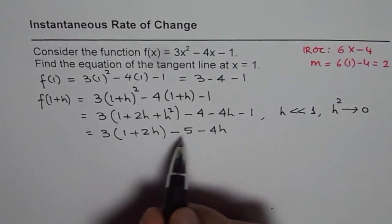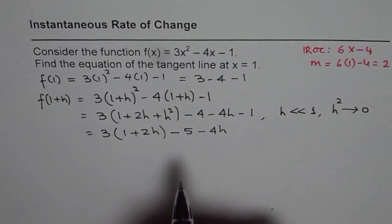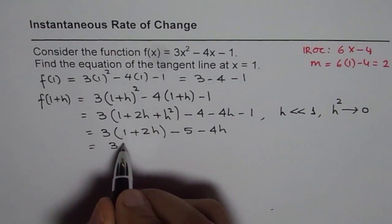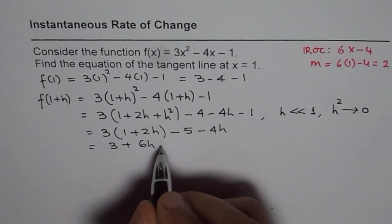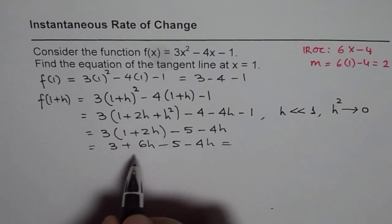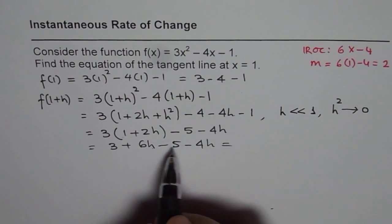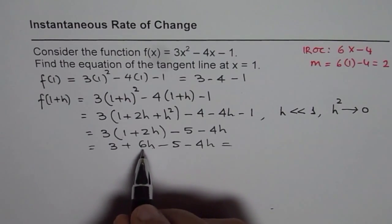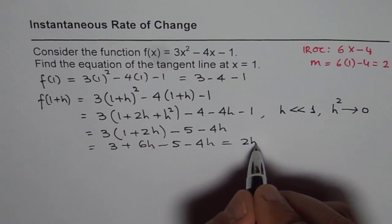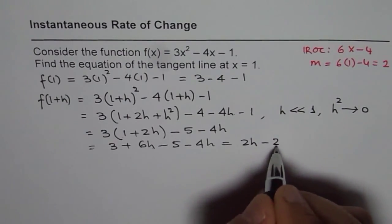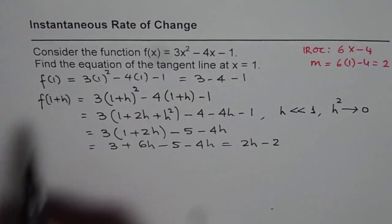You could expand this, you could write this as 3 + 6h - 5 - 4h, which can be 6h - 4h is indeed 2h. So it is 2h and 3 - 5 is -2. So that is what we get as f(1 + h).